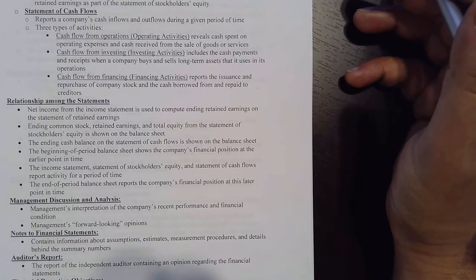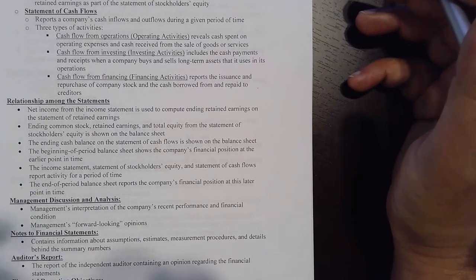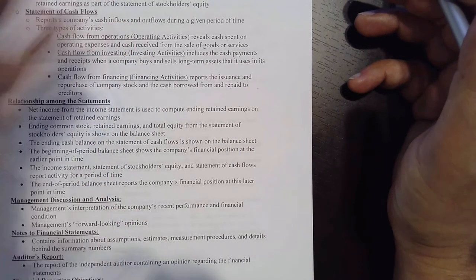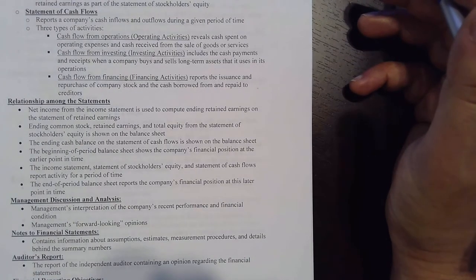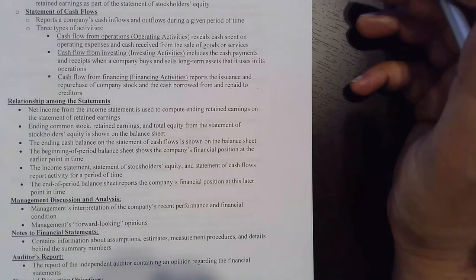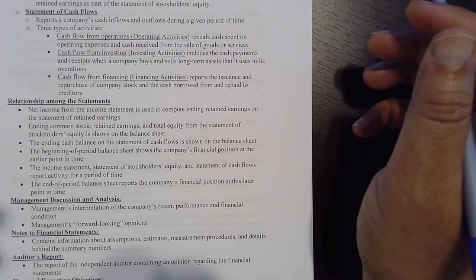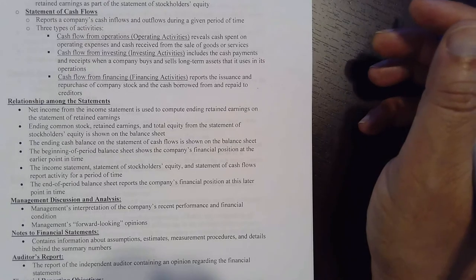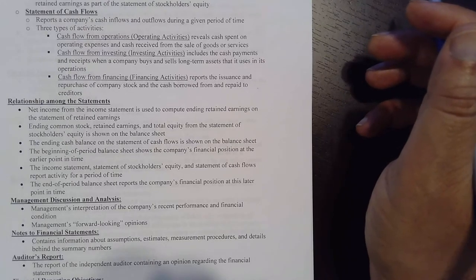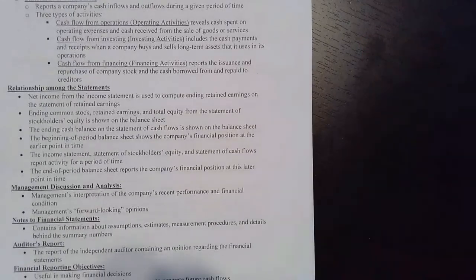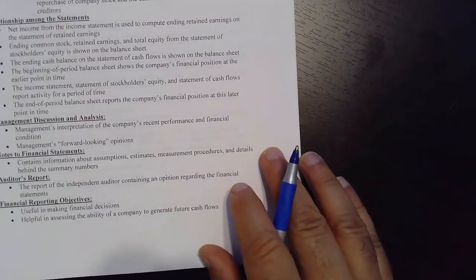What you are investing is your effort and time in the course. At the end of the semester, a GPA of 4.0 shows the result of that investment, and the financing shows you borrowed $2,000 from the Department of Education to attend Tarrant County College, took four classes, and earned an A in all four.